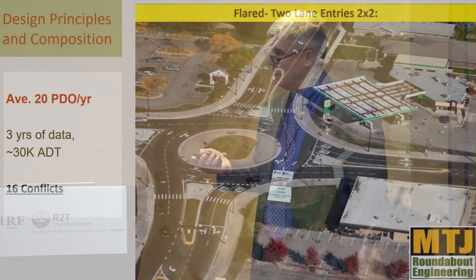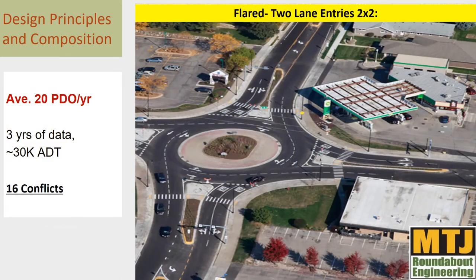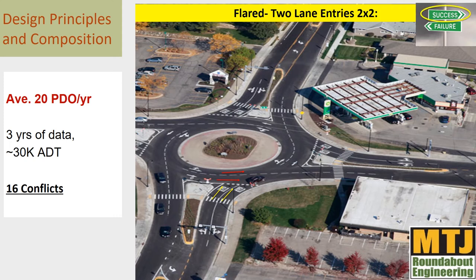There are 16 conflict points in a two-by-two roundabout: two lane entry times two lanes circulating equals four, times four legs equals 16 conflict points. The amount of traffic — around 30,000 ADT — traffic conflict points and the design all affect safety.